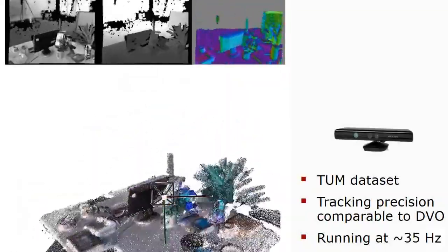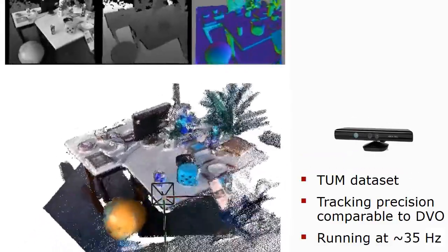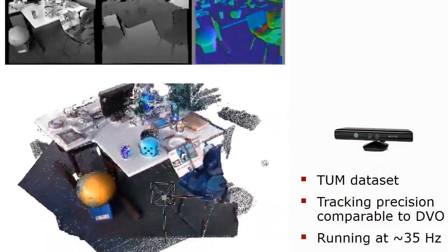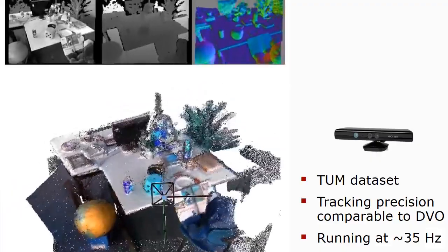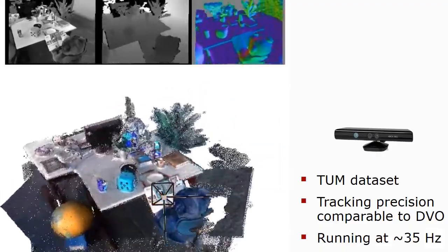Here you see our method running on the TUM dataset, taken with a Kinect sensor. Our approach runs at frame rate while providing the results of similar quality to those reported by DVO. Here, depth, intensity and normals are used as cues.